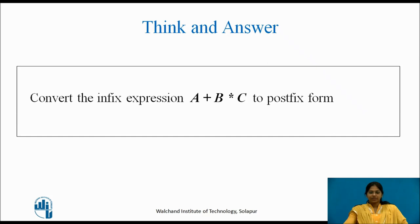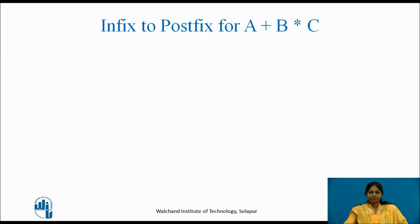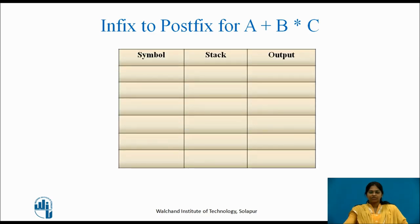Based on the algorithm, let's convert the infix expression a + b * c to postfix form. We need a table with three columns: symbol, stack, and output. The first symbol is 'a' — as it is an operand, it is sent to the output. The stack is empty. The next symbol is '+' — as it is an operator, it is pushed onto the stack. The output remains 'a'. The next symbol is 'b' — as it is an operand, it is sent to the output, so the output is 'a, b'. The stack remains '+' .